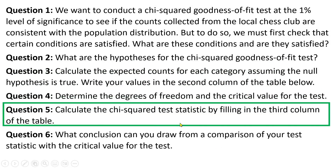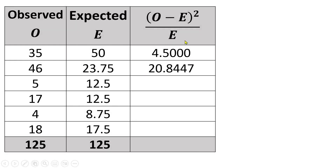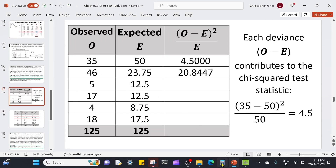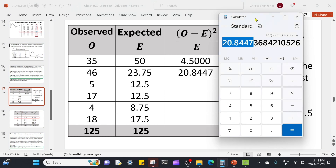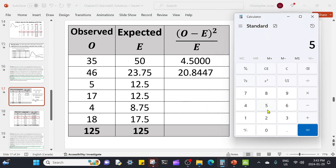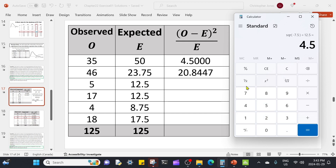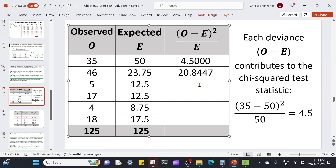Now we're going to see what that difference is by calculating the chi-squared statistic. Let me do one more just to be sure we understand where these numbers come from. We compare what was observed — in this case 5 — minus what would be expected if the null was true — in this case 12.5. We square that difference and then divide by that expectation again, 12.5. This gives us the contribution to the chi-squared statistic by that third observed value, which is 4.5.